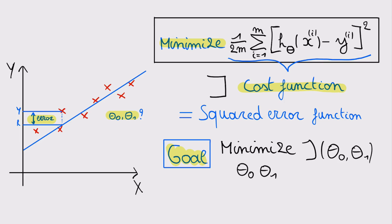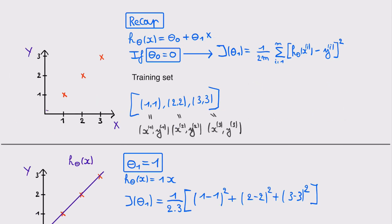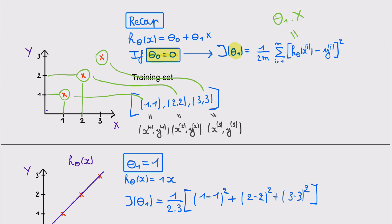To illustrate what this cost function means, we look at an example where we simplify the hypothesis by setting theta 0 equal to 0. In this case we try to find the best value for theta 1, so the hypothesis simplifies to theta 1 times x. Looking at the data points on the graph, we have three training samples: the first has x equal to 1 and y equal to 1, the second has x equal to 2 and y equal to 2, and the third is (3, 3).